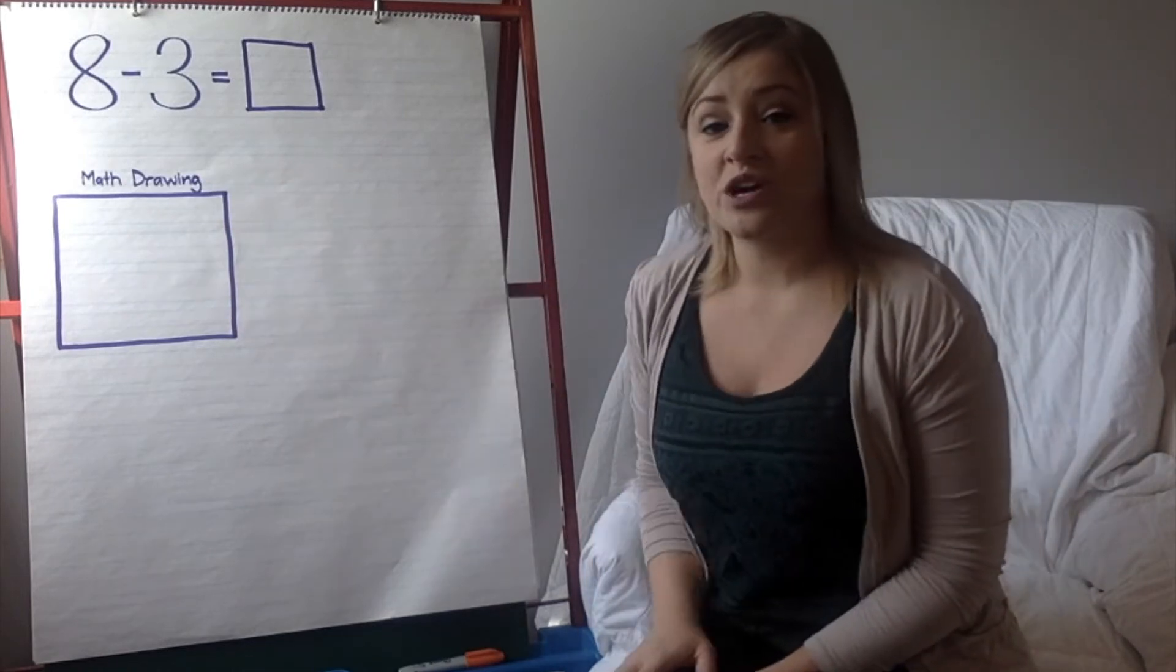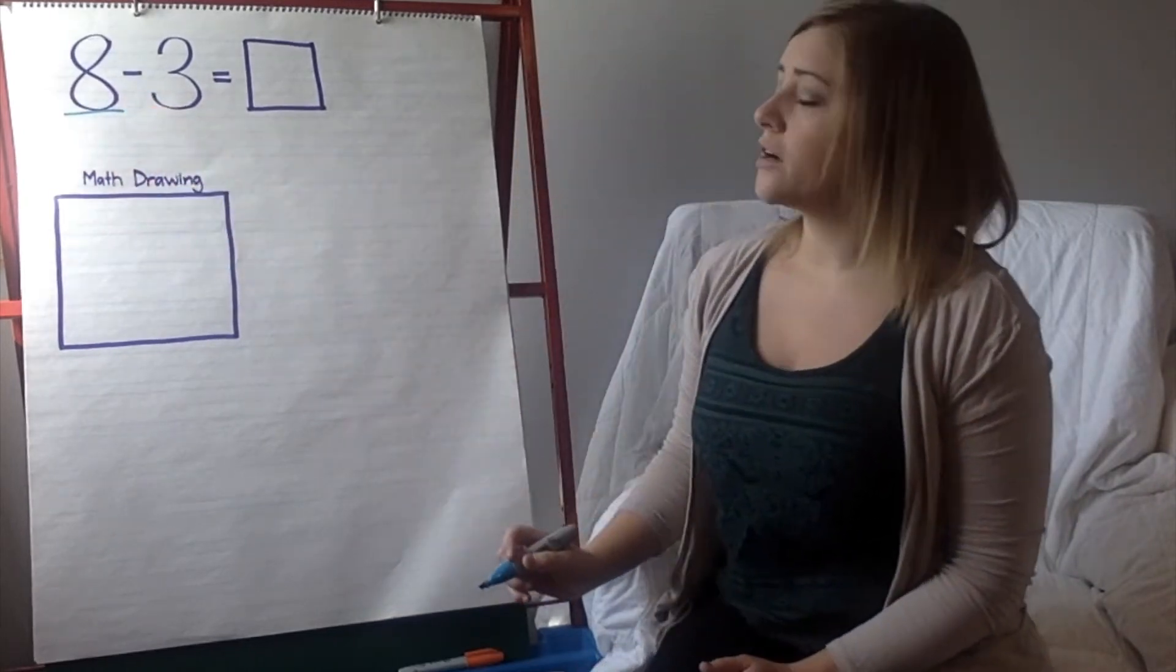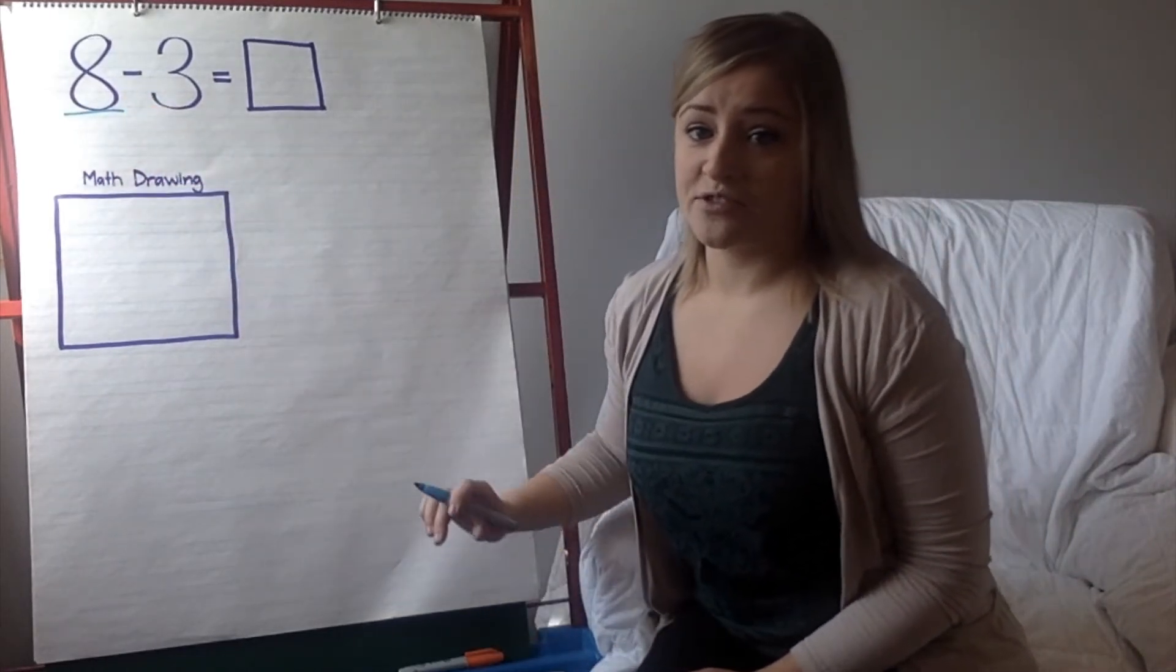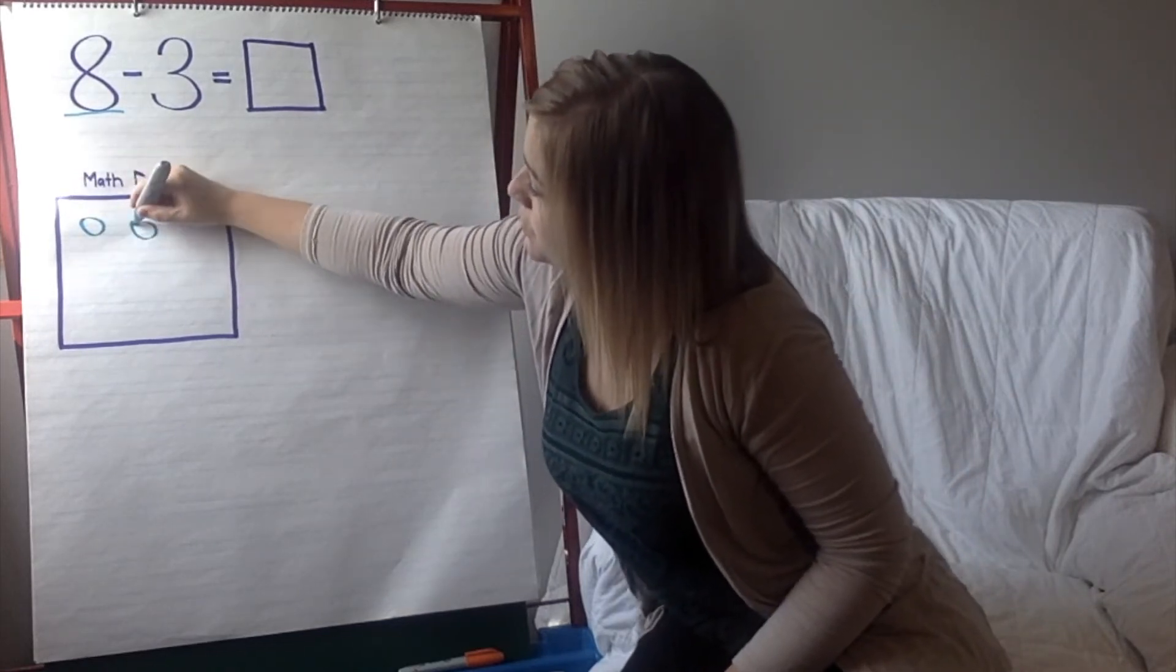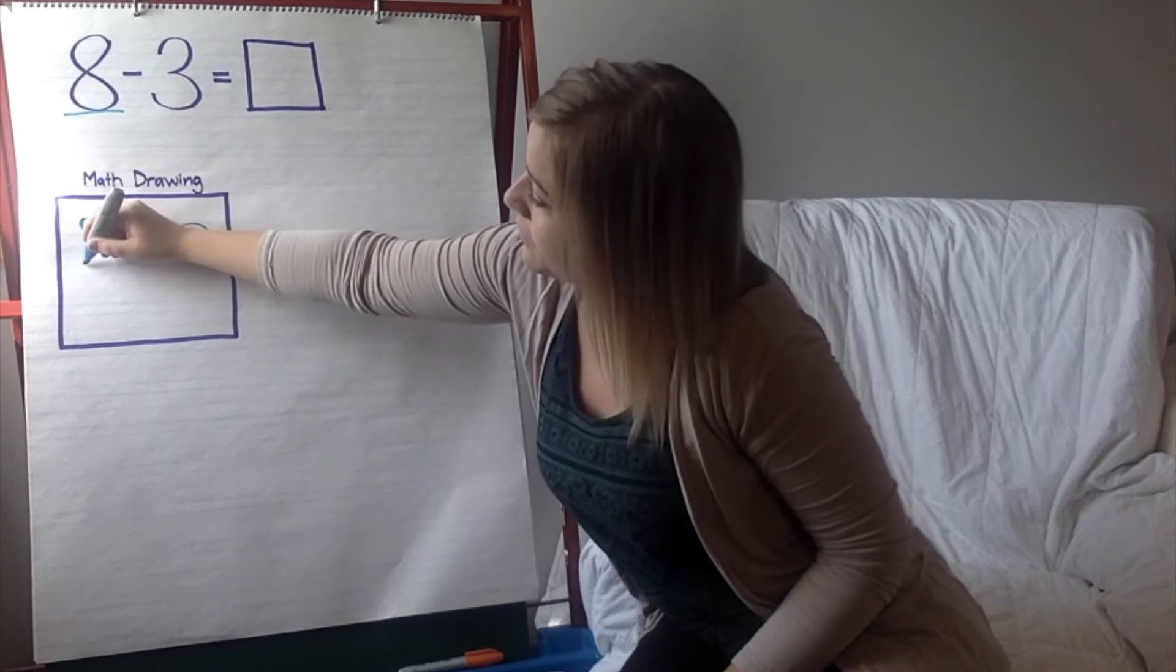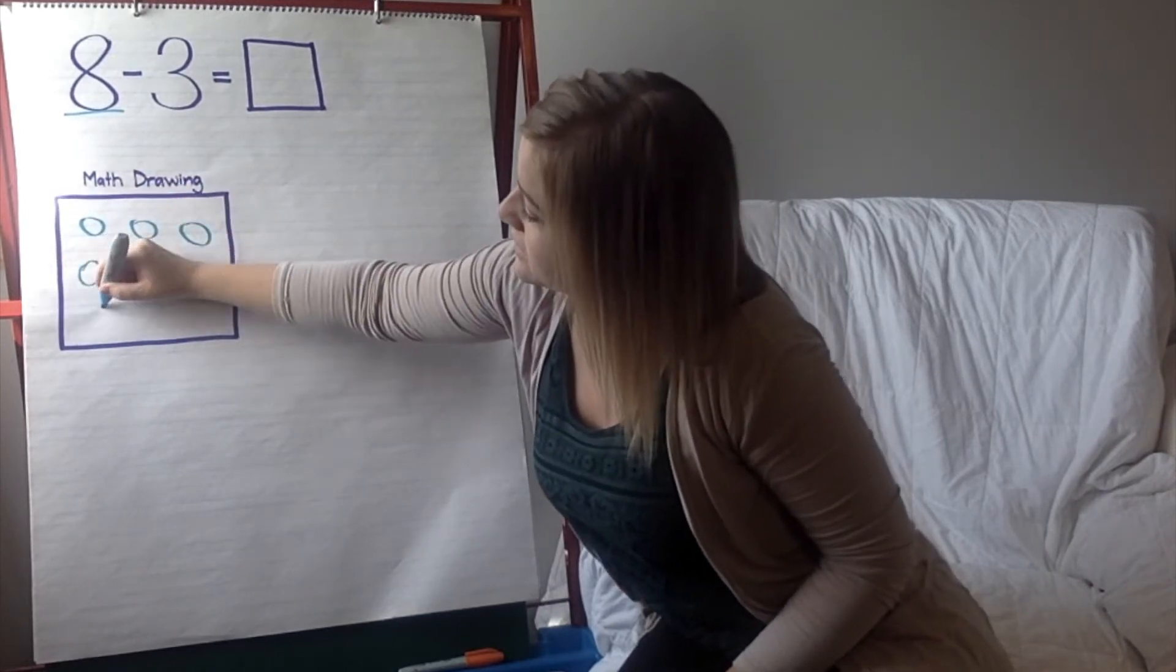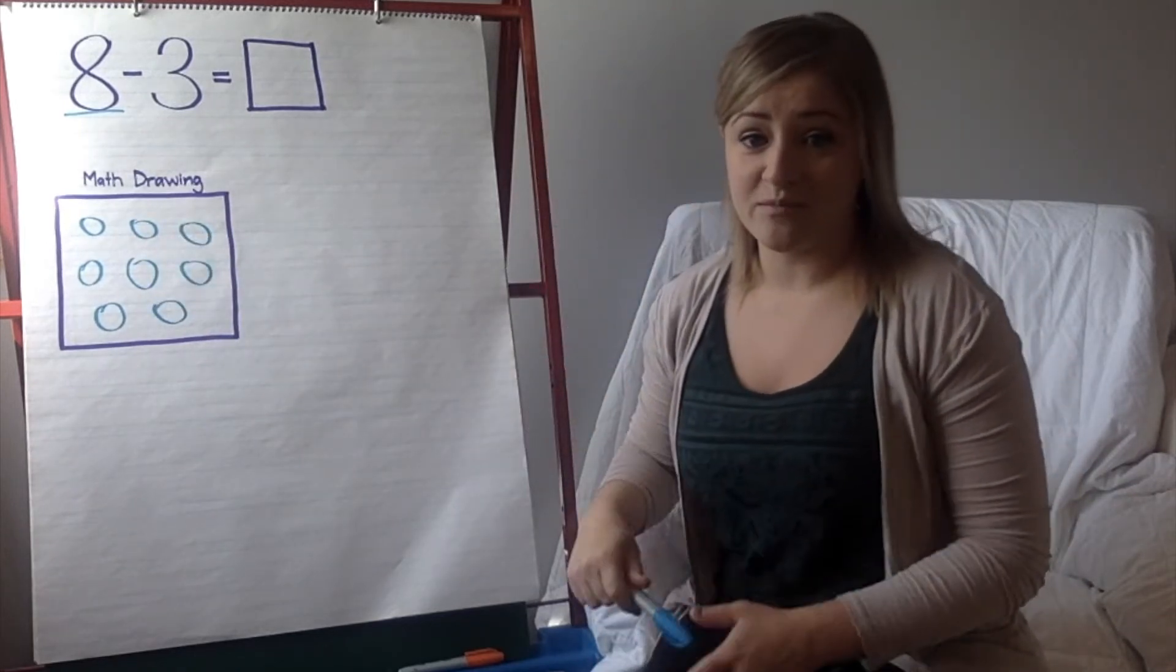First, we're going to start with that math drawing again. I underline my first number with one color, and I'm going to make 8 circles in my math drawing. Count with me. 1, 2, 3, 4, 5, 6, 7, 8. I have 8 circles in my math drawing.